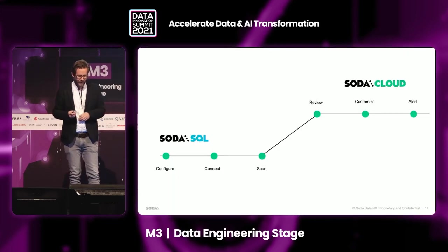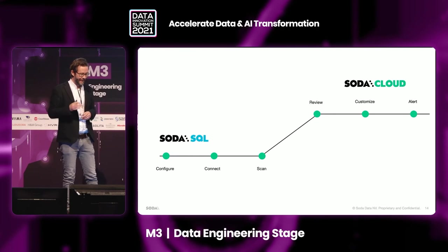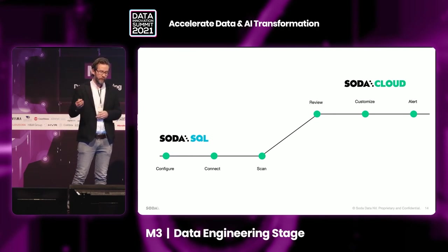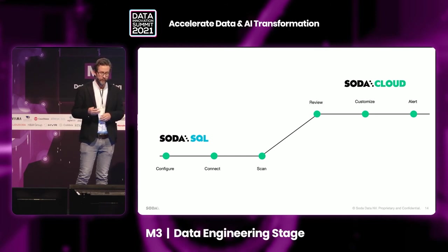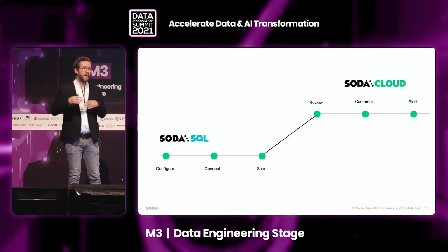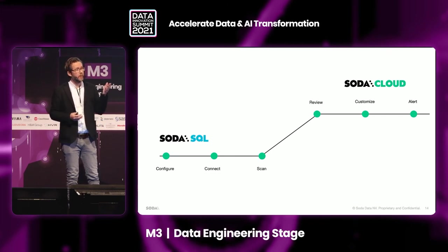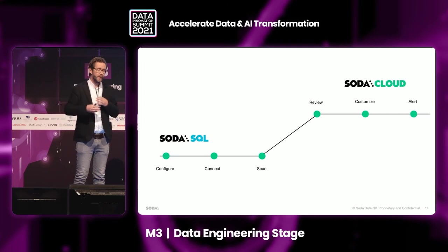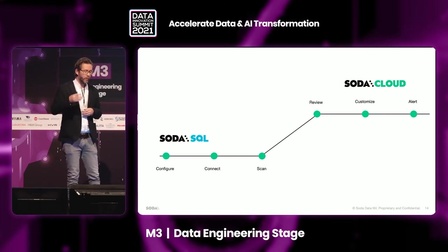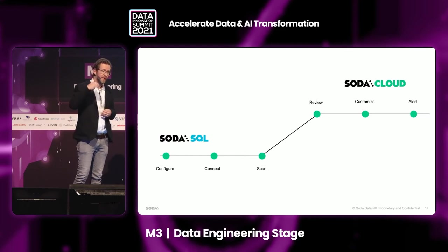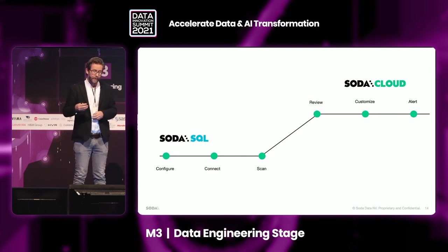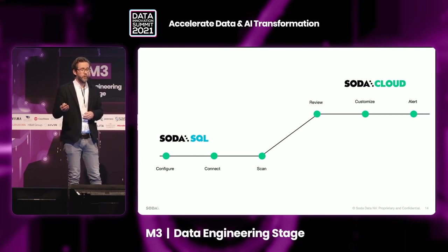The demo will be somewhat theoretical here, but if you come to the booth later, what we typically show is starting in data engineering land by working with Soda SQL — how to configure it and connect it to a data source. Then you perform a scan, which collects the metrics and evaluates the test cases. That gets uploaded to Soda Cloud, where they can be reviewed, customized, or you can create tests directly from there. The next scan will pick up those changes and execute them as part of an Airflow DAG or however you want to run it. And then for alerting, you configure who should receive this, either via email or the native Slack integration.